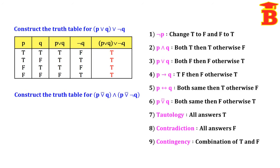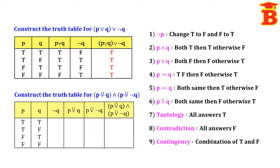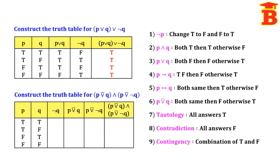Next, construct the truth table for (P XOR Q) AND (P XOR NOT Q). We take P and Q, two statements, and four possibilities: TT, TF, FT, FF. See the question and take the table: NOT Q first, then first bracket P XOR Q, then second bracket P XOR NOT Q, and finally take the full expression.